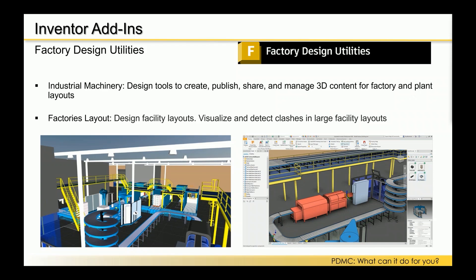The last Inventor add-in is the Factory Design Utility, which helps maximize production performance by planning and validating factory and plant layouts. If you already have a flat 2D AutoCAD drawing of your factory layout, this utility takes that and turns it into a 3D model. You can design and manage 3D machines — they don't have to be perfect models, just simplified layouts — and visualize and detect clashes in large facilities, look at time studies, and see how things move through the shop.